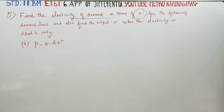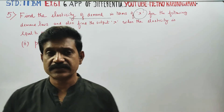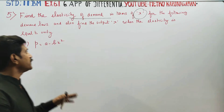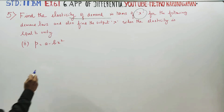Dear 11th Standard Business Mathematics students, I am Etro Karnagaran. In sum number 5, you have to find the elasticity of demand for P is equal to A minus Bx square.